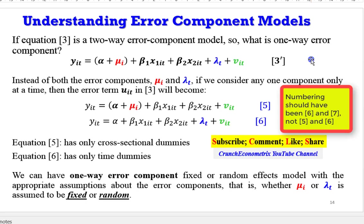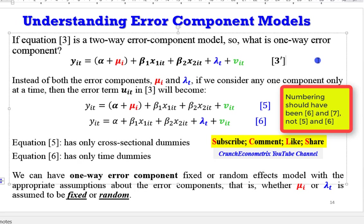So, if equation 3 is a two-way error component model, what is a one-way error component model? Remember, equation 3 is now rewritten as equation 3 prime. So, a one-way error component model is when only one component is included in the model, aside the remaining error term.